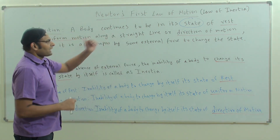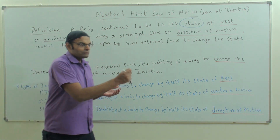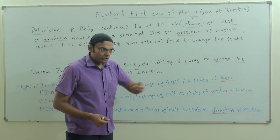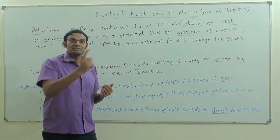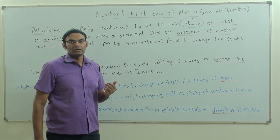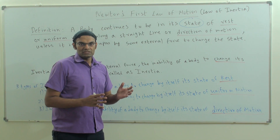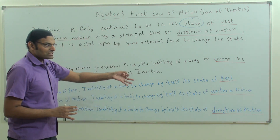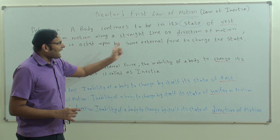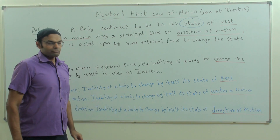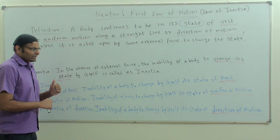The next part is that a ball rolling on the floor cannot change its direction unless it is acted on by an external force. So there are three states: state of rest, state of uniform motion in a straight line, and state of direction of motion. This is also called the law of inertia.